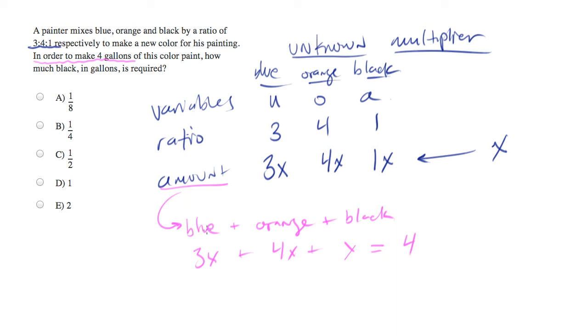And when you collect like variables, what we end up with is 8x equals 4. Let's divide both sides by 8. And what you get is x equals 1 half.